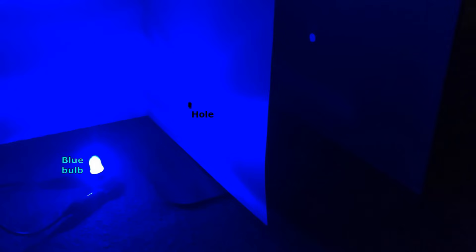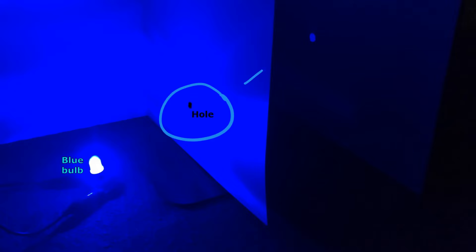Here we have a blue light bulb glowing inside a dark room, and that blue bulb is making everything around it look blue. But you'll also notice that there is a hole in the paper that's in front of the blue bulb, and one dot of blue light that's behind that paper.